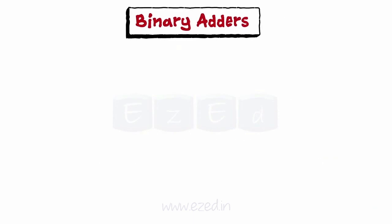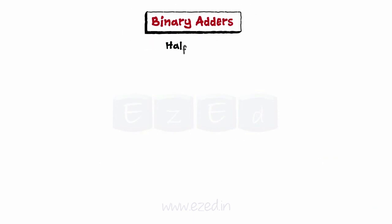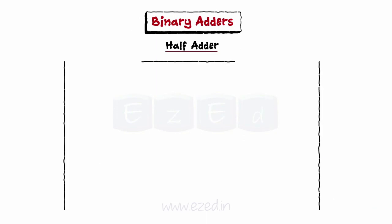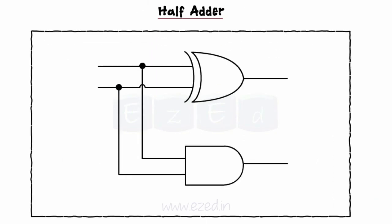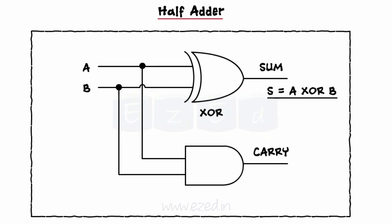Let's design the logical circuits to add the binary numbers. The first adder we will learn is the half adder. The schematic diagram of the half adder is as shown. It is used to add two single bit numbers A and B. From the diagram, the equation for the sum becomes S equals A XOR B, and the equation for the carry becomes C equals A dot B.